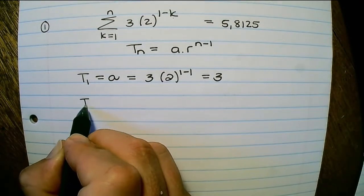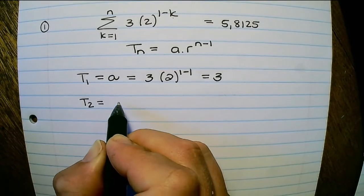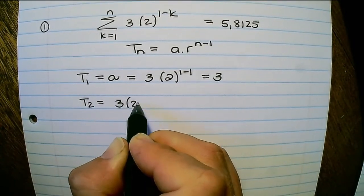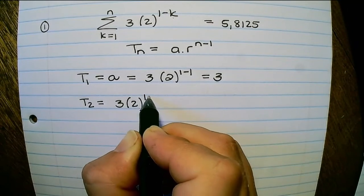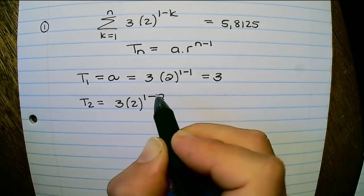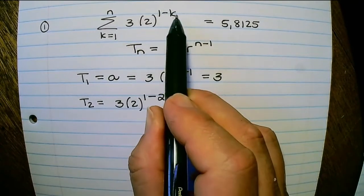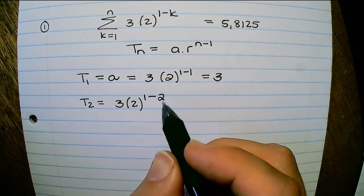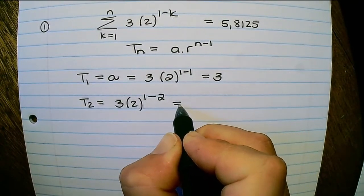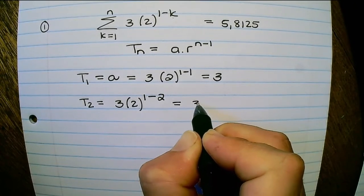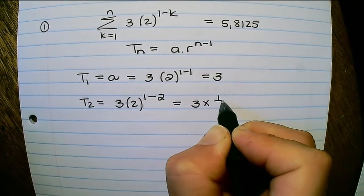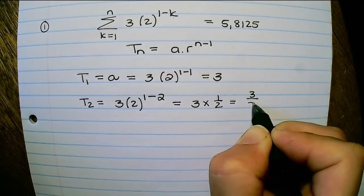Then we need to determine the second term. So it is 3 times 2 minus 2, because the next value after k is equal to 1, and if I multiply out, I see this is 3 times a half, which is 1 and a half.